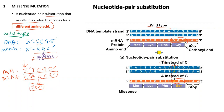Missense mutation may involve the alteration of a single amino acid in a crucial area of a protein — such as the active site of an enzyme — which can significantly alter protein structure and function. However, missense mutation can also have little effect on the protein produced, for example if the new amino acid has similar properties to the one it replaces, or if it is located in a region of the protein not essential to its function.